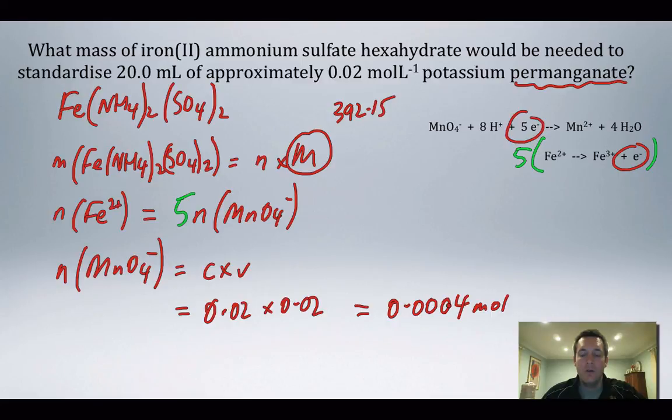I've got 0.0004 moles of permanganate ions. I multiply that by five, so I'm using this number here, multiply it by five and I get 0.002 moles. Then I multiply 0.002 moles by the molar mass, that's 392.15, and that is 0.784 grams.